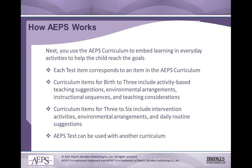Once you've met with the team and scored the AAPS, you'll use the AAPS curriculum to embed learning activities to help the child reach the goals. Each skill or test item in the AAPS corresponds to an item in the AAPS curriculum. The curriculum items for birth to three include activity-based teaching suggestions, environmental arrangements, instructional sequences, and teaching considerations. The three to six curriculum includes intervention activities, environmental arrangements, and daily routines and suggestions. These curriculum activities are designed to help you monitor the child's progress, and you can use them or continue with your own program's curriculum.